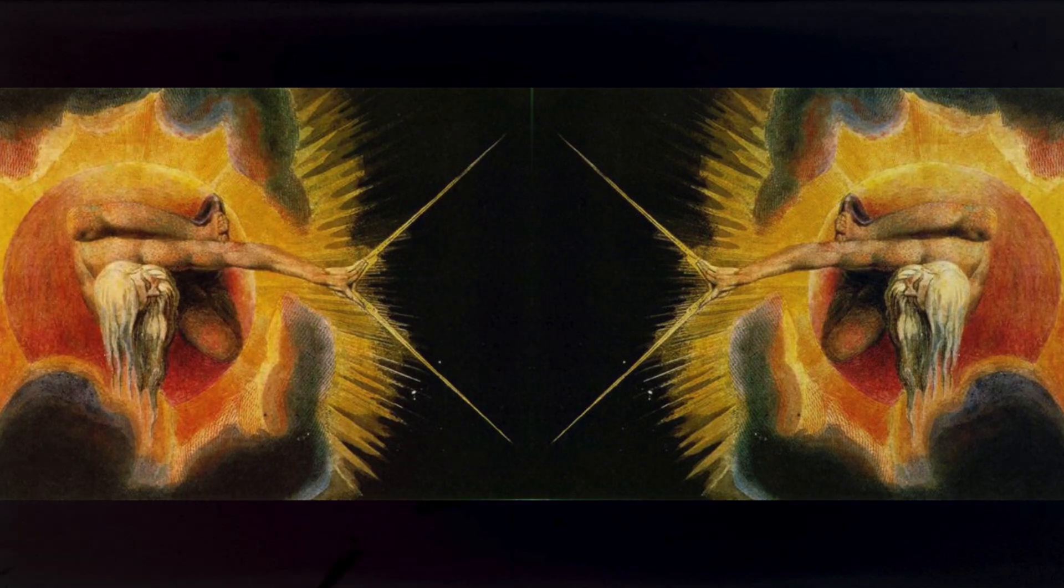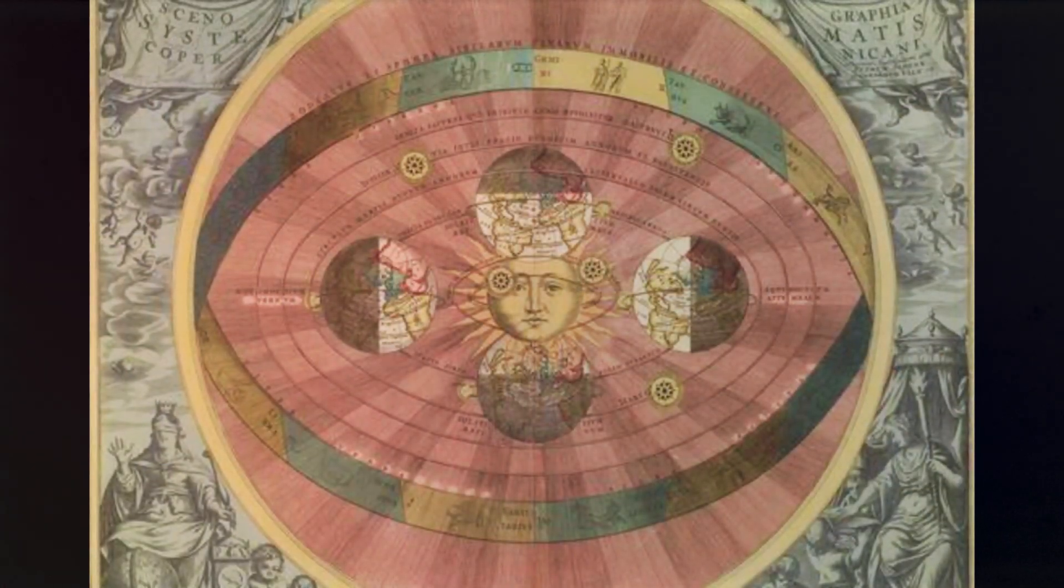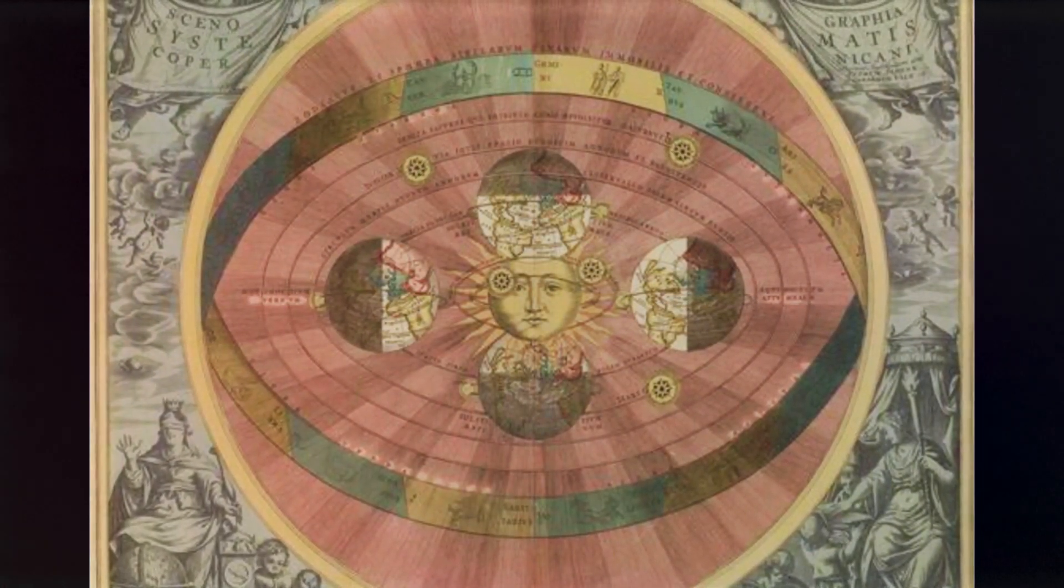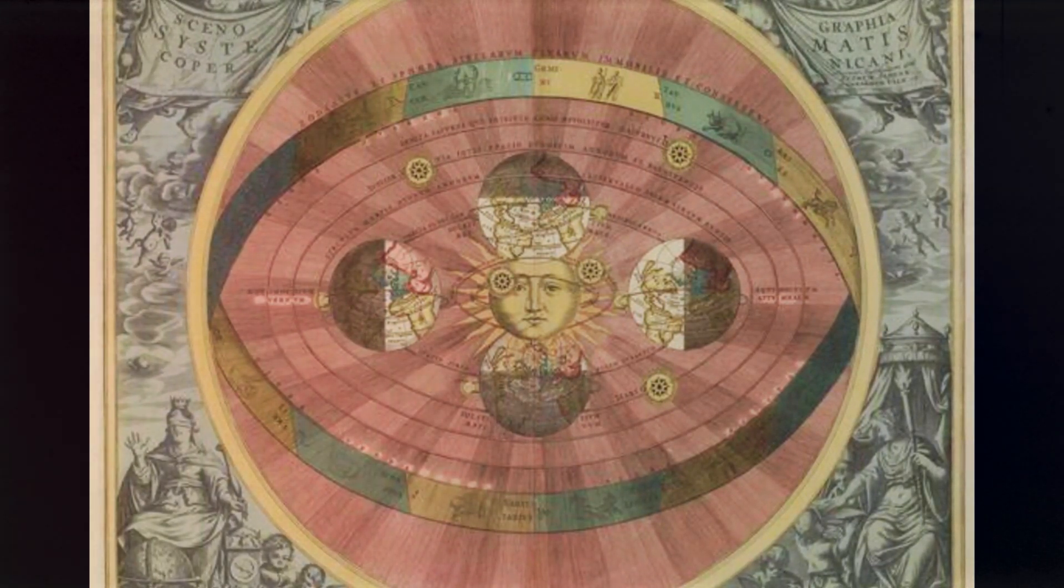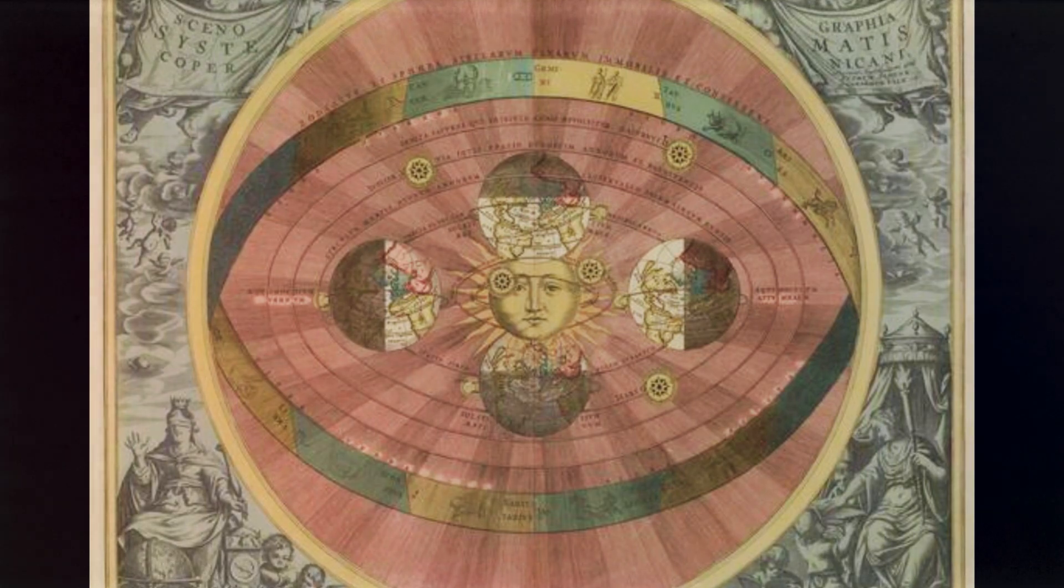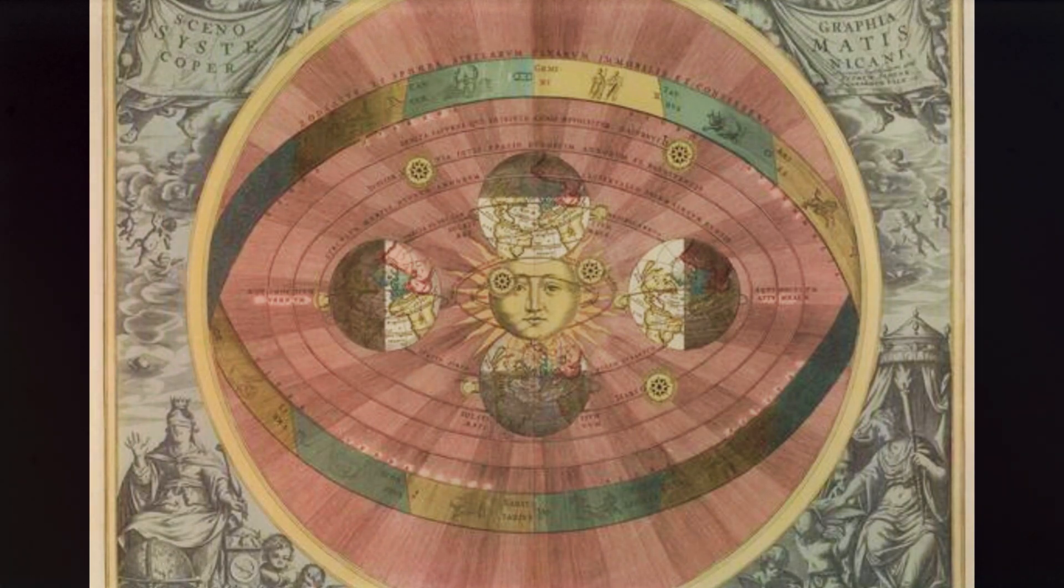His philosophy, centred on the idea that the universe operates according to a pre-established harmony, stands as one of the boldest attempts to reconcile science, metaphysics and theology into a single coherent vision. He argued that we live in the best of all possible worlds, a claim that has sparked centuries of debate.